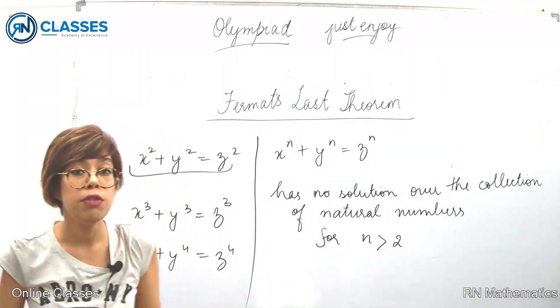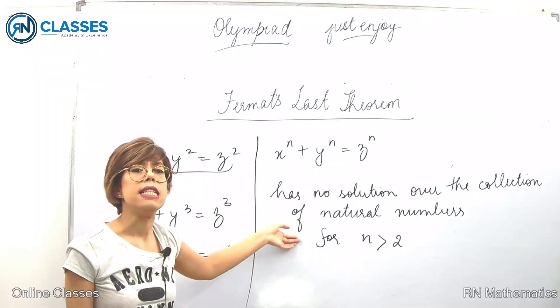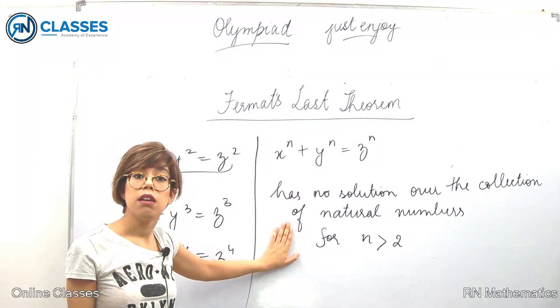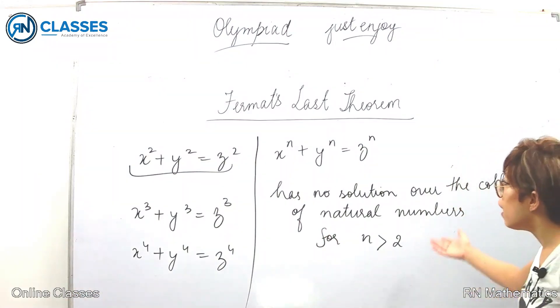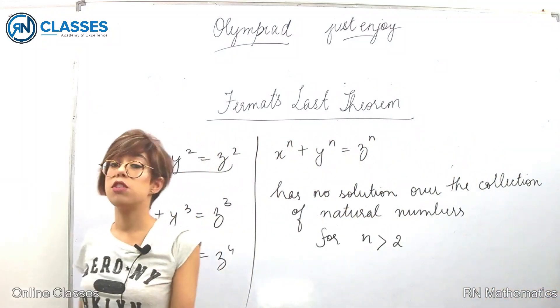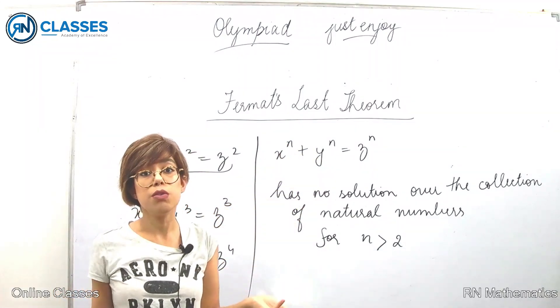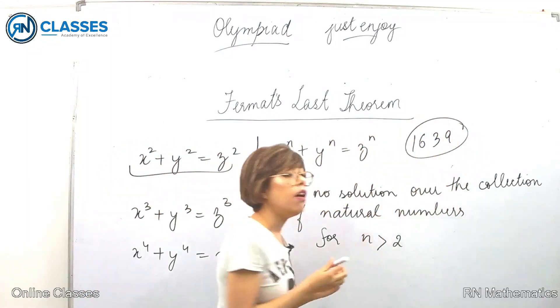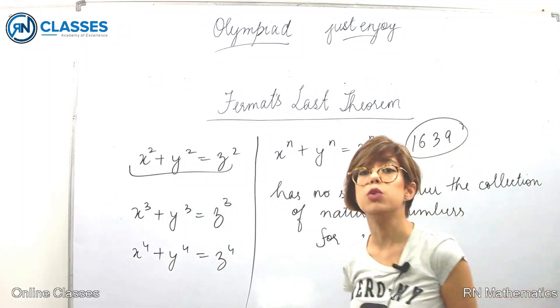We never got to know about his proof, but other mathematicians came across this result. This result seems so simple and it seems true. They were like, let's prove it. When they tried proving this, they realized they can't prove this. They were unable to do so. Even mathematicians like Euler tried but were unable.